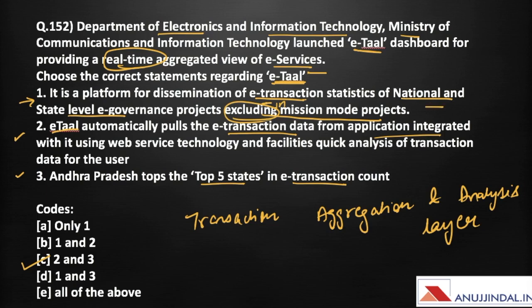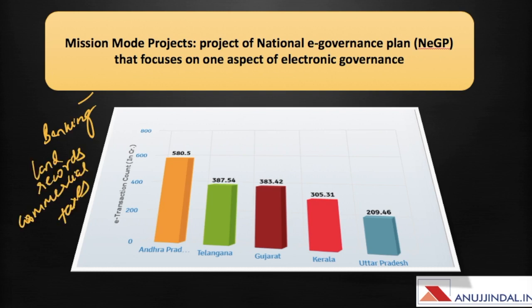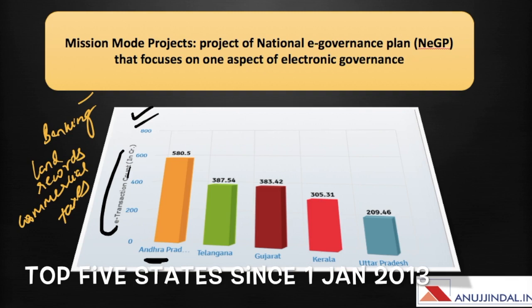Looking at the e-transaction count graph in crores, Andhra Pradesh tops the top five states, confirming statement three is correct. After Andhra Pradesh, the ranking is Telangana, then Gujarat, then Kerala, and then Uttar Pradesh.